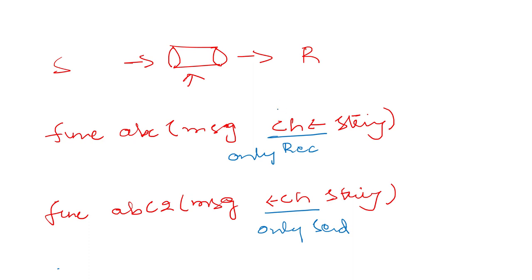So the first function will only receive some data and the second will only send data. In the first one we cannot send any value — sending any value will be wrong. And for the receiving end, we cannot pull out any values from this channel, and we cannot push any data to this channel either.